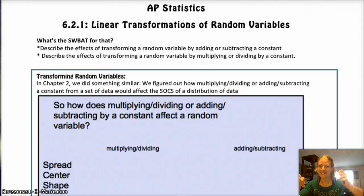Okay, so 6-2! There's two parts of 6-2. The first one is linear transformations of random variables, like adding, subtracting, multiplying, and dividing by a constant, and how does that affect the shape and the center and the spread of the distribution.